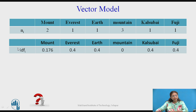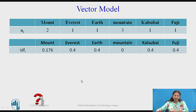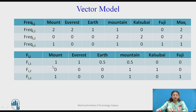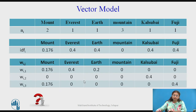Once we have identified IDF_i and f_ij, we calculate the weight vectors. You can pause the video and try to find the weight vectors yourself. It is a multiplication of f_ij and IDF_i, and we will obtain 3 weight vectors: W_D1, W_D2, and W_D3. For example, 0.176 multiplied by the particular weight gives us the weight vectors.